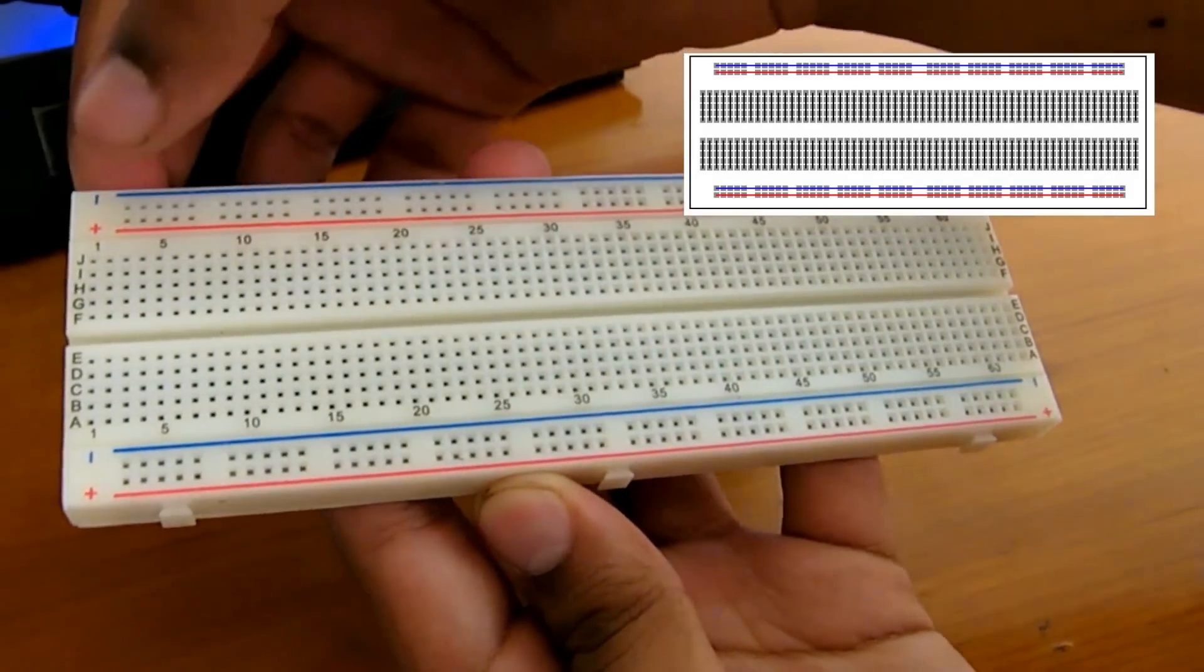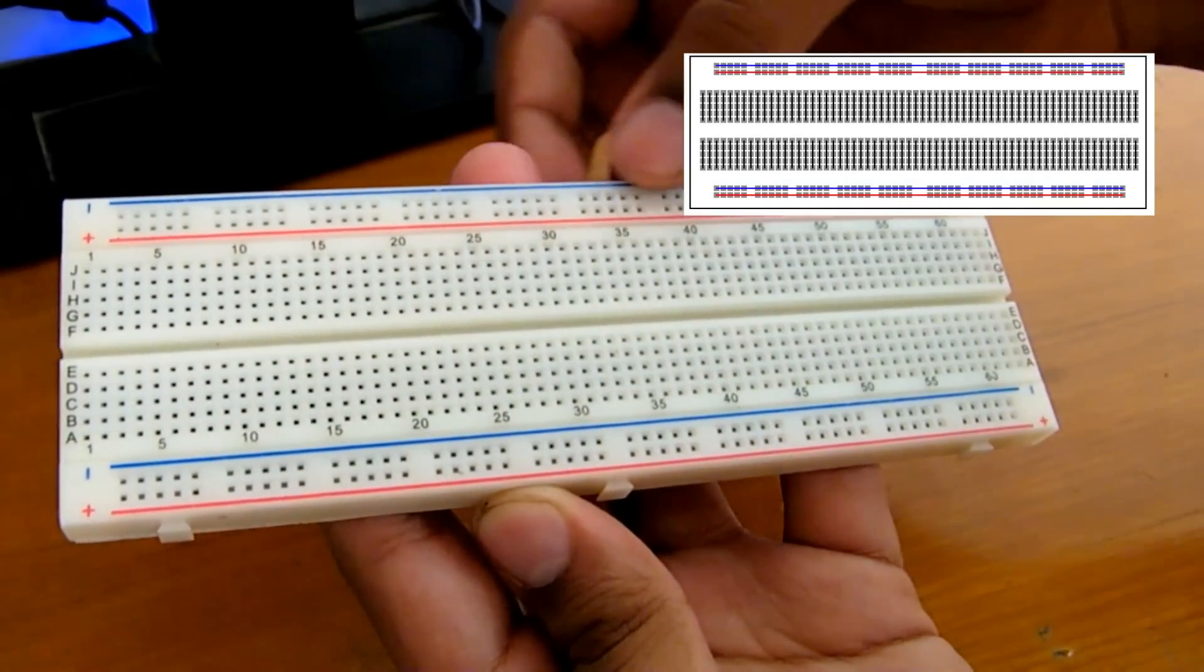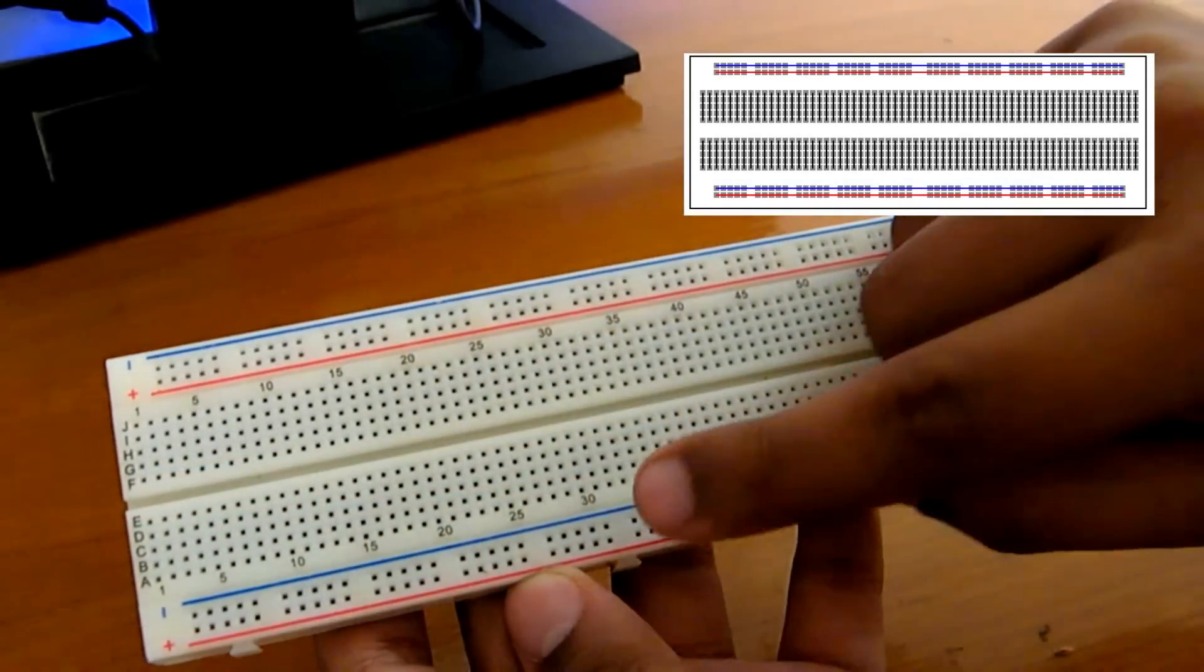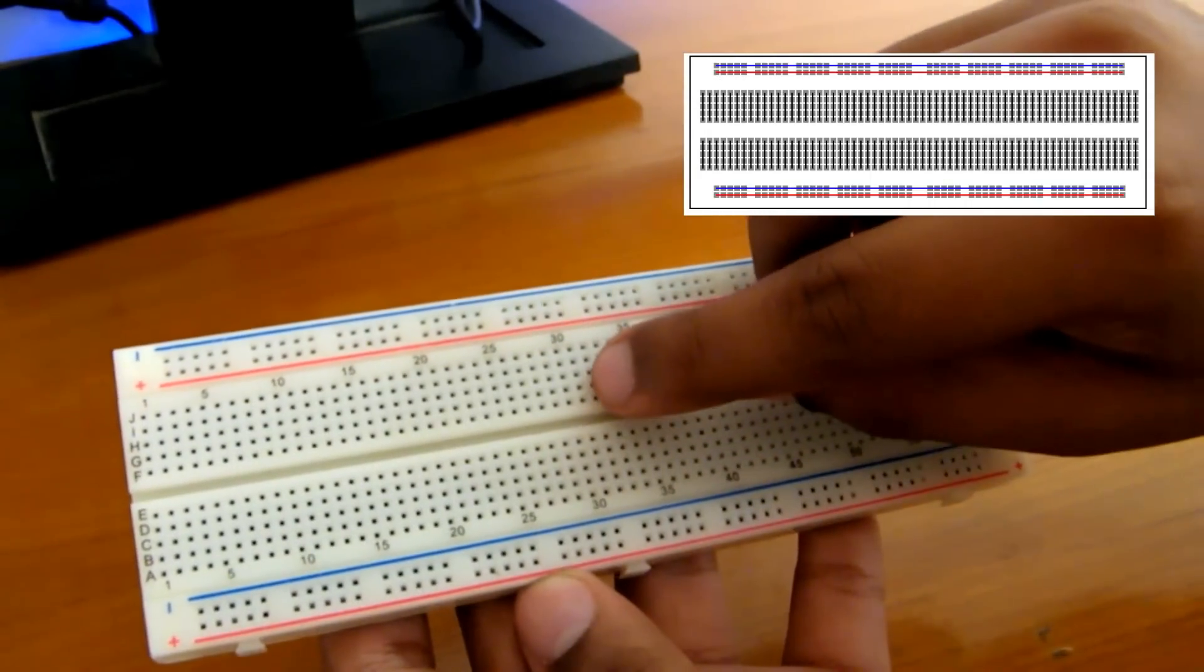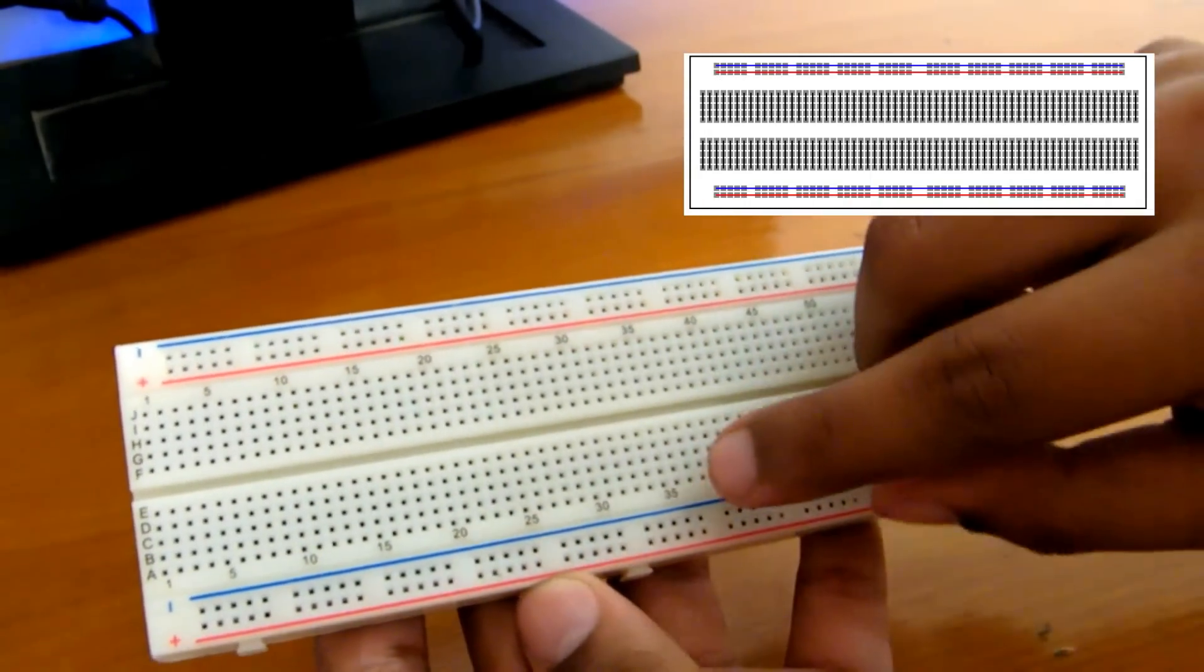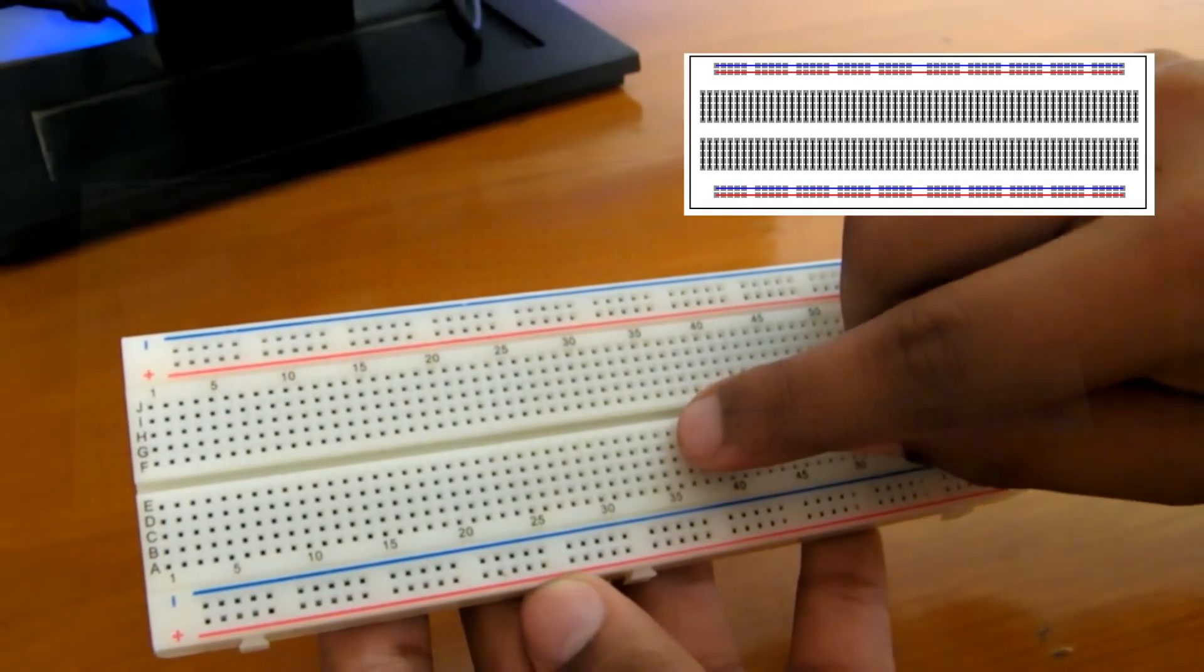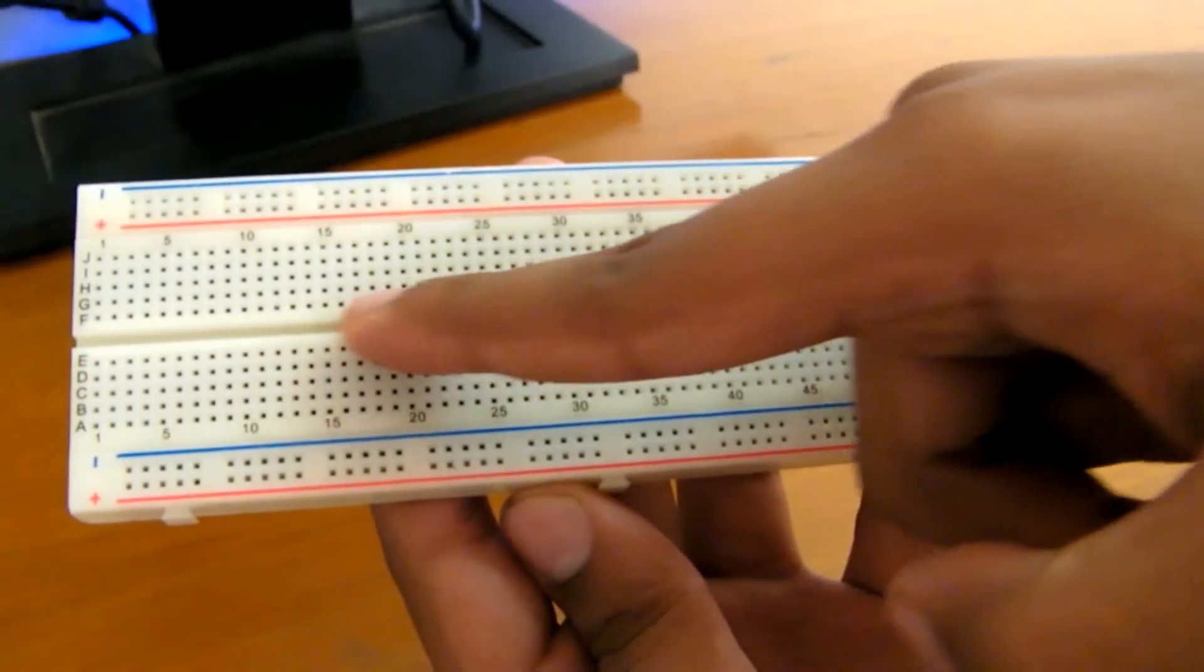And there is the middle part, which is your prototyping space. These rows are connected vertically, though not along the middle gap. This groove is where you put an IC.